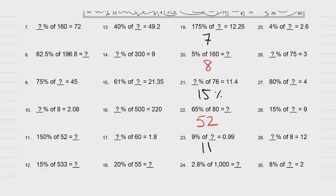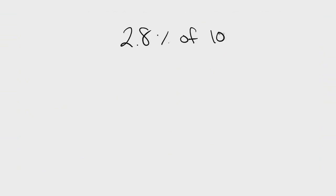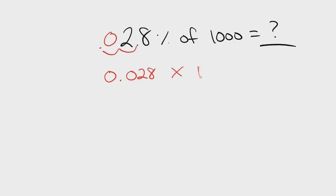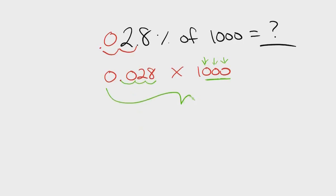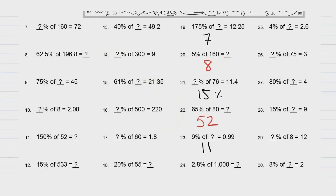Last one of this set — problem 24: 2.8% of 1,000. Change percent to decimal: move two spaces, put a zero in the empty space, so this becomes 0.028 times 1,000. When multiplying by a multiple of 10, you just move the decimal for every zero you have. I have three zeros, so move the decimal three spaces to make it bigger: this gives us 28. The answer for number 24 is 28.